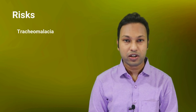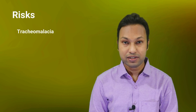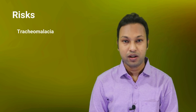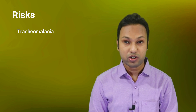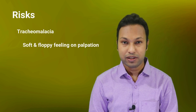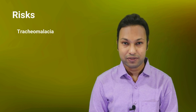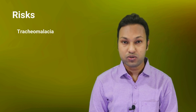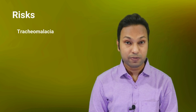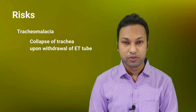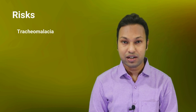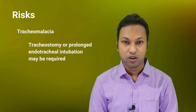Another complication is tracheomalacia, which may be caused by long-standing retrosternal goiter due to compression of the tracheal cartilage, resulting in its destruction. During operation, tracheomalacia can be diagnosed by palpating the trachea — if it feels soft and floppy, there is a risk. Another intraoperative method is collapse of the trachea on gradual withdrawal of the endotracheal tube. Tracheomalacia can be managed by tracheostomy, or some patients may need prolonged intubation.